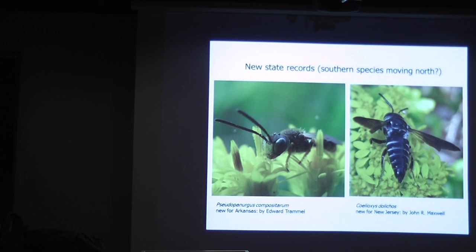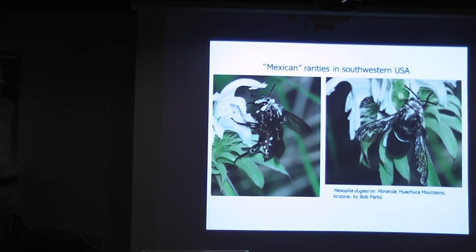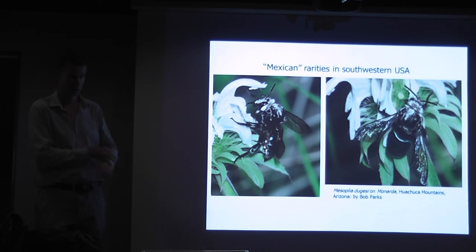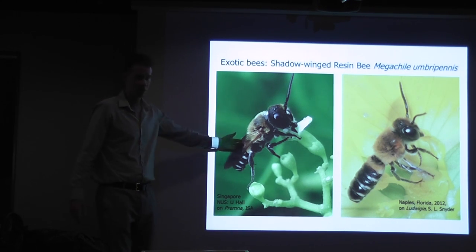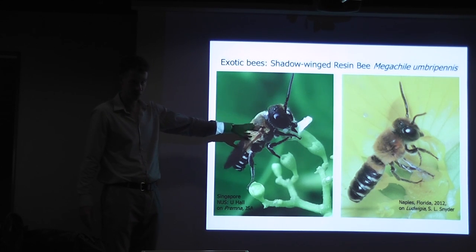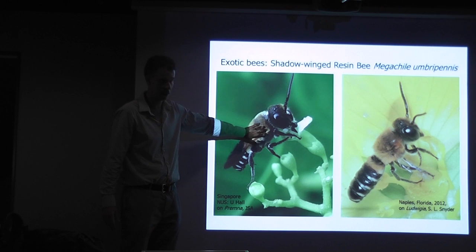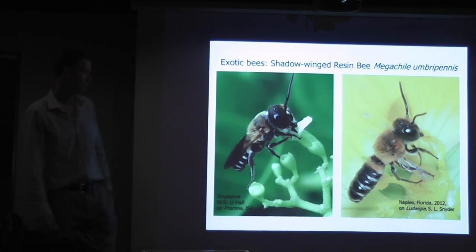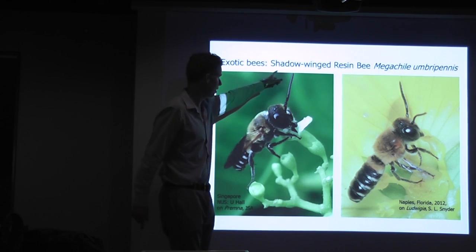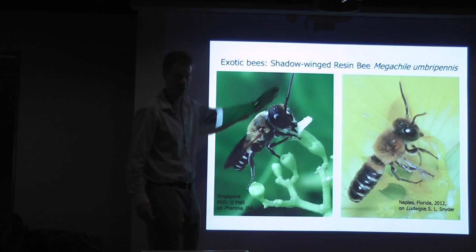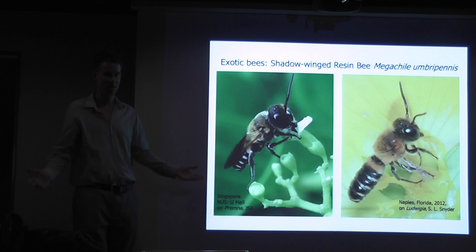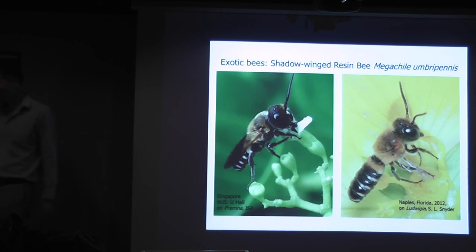We're getting new distributional data, very rare things like Mexican tropical species — a parasitic bee that showed up in Arizona. This bee showed up in Florida, which is also found at University Hall in Singapore, so we can detect and monitor the spread of exotic bees using the images. The bees don't have common names, so we just make them up — the bird people have committees and such, but I just do it on my phone when I get bored.